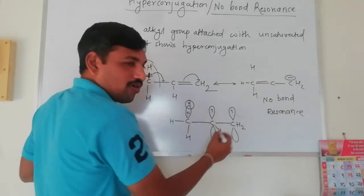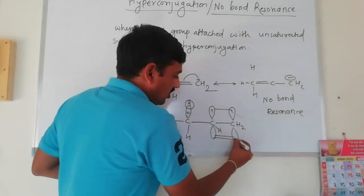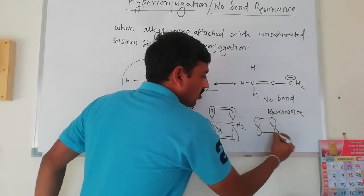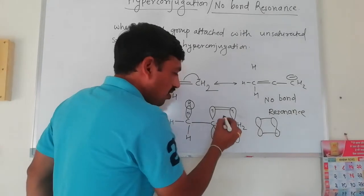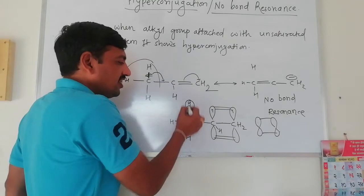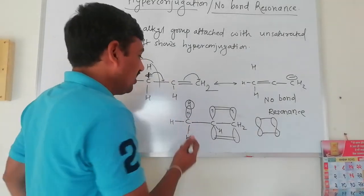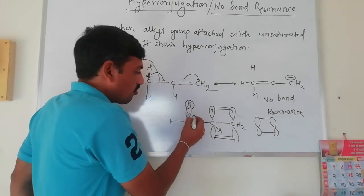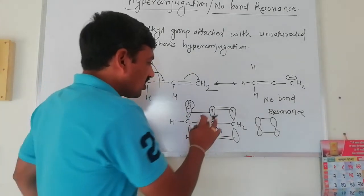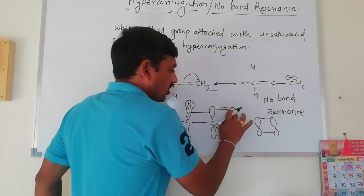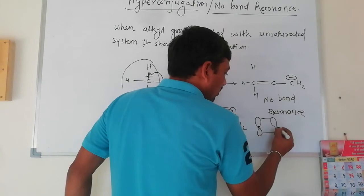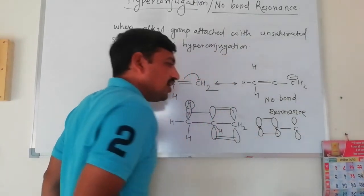In the orbital picture, we can see pi bonding, pi bonding overlapping with sigma bonding — C-H overlapping with 2 electrons — and then the carbon-carbon p orbital interaction.